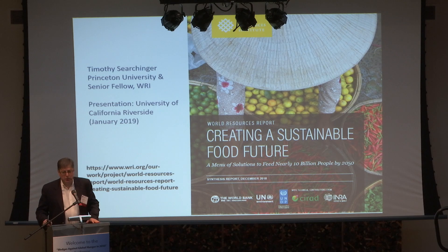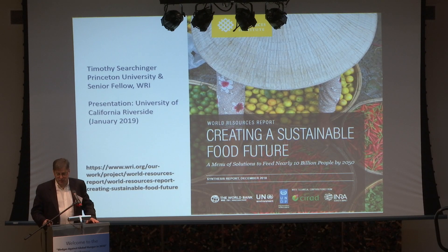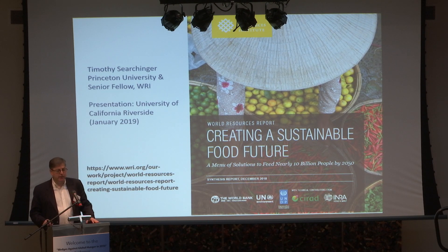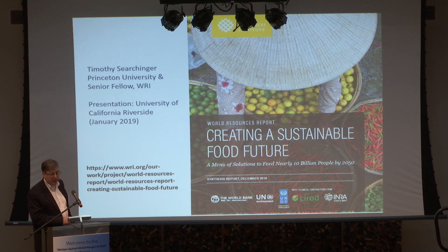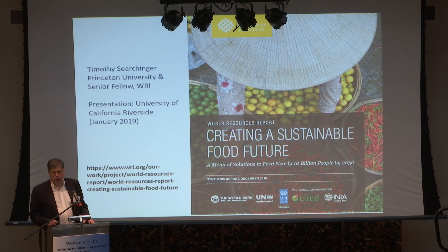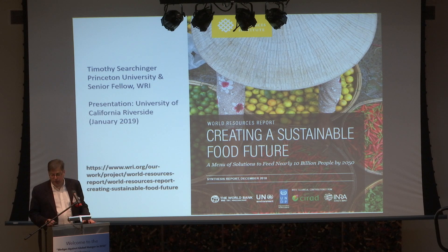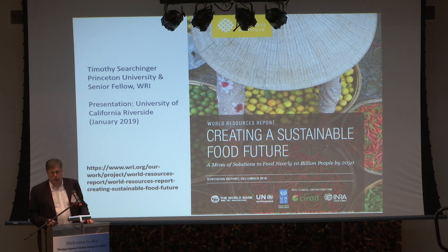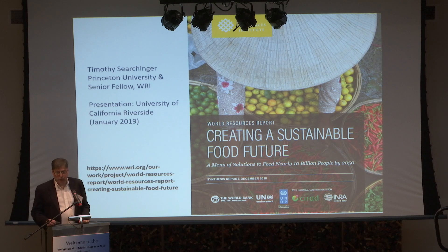I come to you as essentially the agriculture department at Princeton, so it's a pleasure to come to a university with a real agriculture department. My field is how do we feed the world without destroying it? The population is likely to grow to 9.8 billion people by 2050. We've just put out a report with the World Bank, the World Resources Institute, and lots of other organizations on how you might actually do that — how to feed the world by 2050 without destroying it, with acceptable greenhouse gas emissions and without converting more land. There's a synthesis report and a 500-page version coming out in May or June.